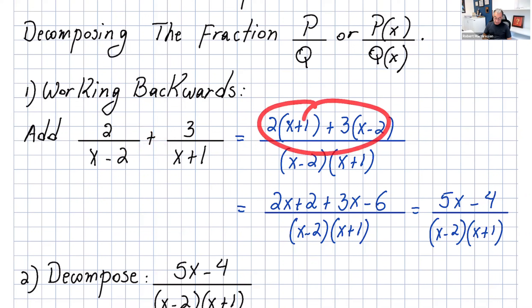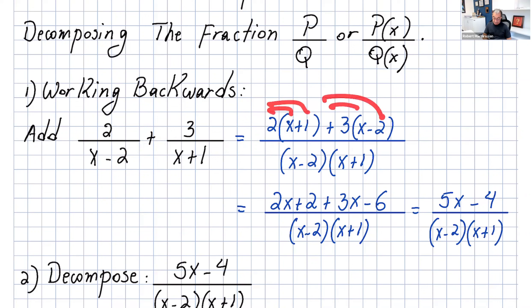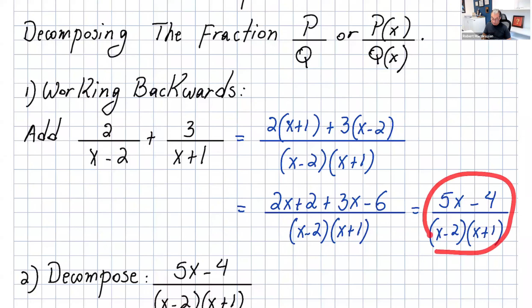plus 3 times x minus 2, and then you can simplify the numerator. So you get 2x plus 2 plus 3x minus 6, all over x minus 2 times x plus 1.